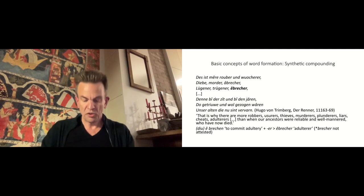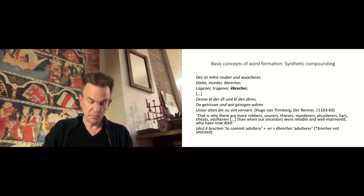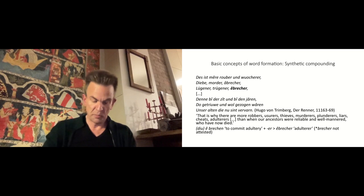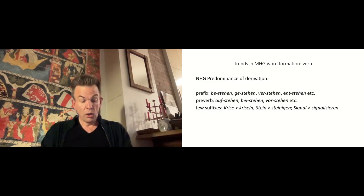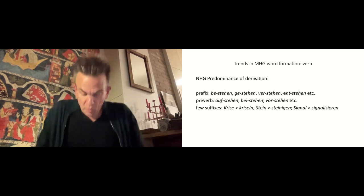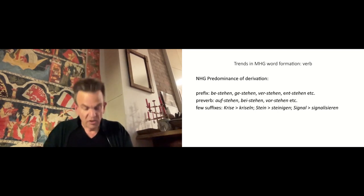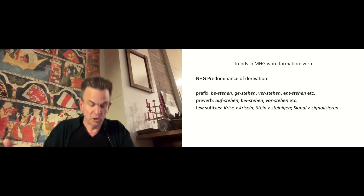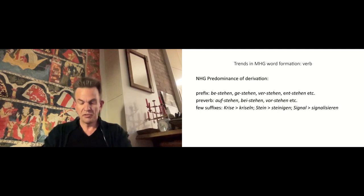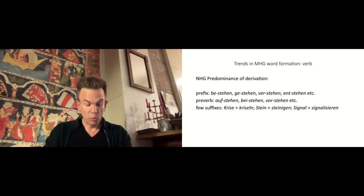Having surveyed Middle-High German word formation patterns, let us now take a diachronic look at some areas of verbal and nominal word formation where the Middle-High German system shows a marked difference from Old-High German. Word formation in contemporary German verbs is dominated by derivations, namely prefix and pre-verb formations. In contrast, suffixation is marginal for verbal derivation in modern German. Looking at verb formation in the history of German, this was not always the case, and Middle-High German is essentially responsible for the present state of affairs.